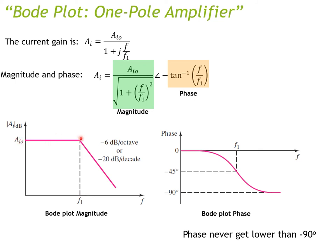Plotting the Bode plot for the one-pole case: the magnitude stays flat until the pole frequency, then decreases at −20 dB/decade. The phase never goes lower than −90 degrees, so it never reaches −180 degrees. Therefore we know this one-pole system is going to be stable.